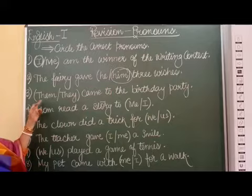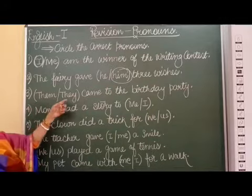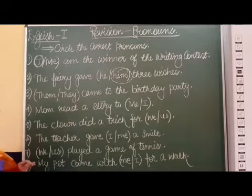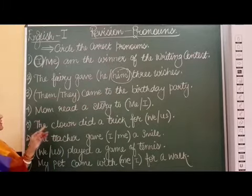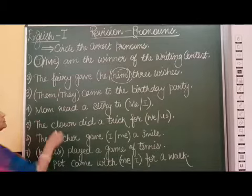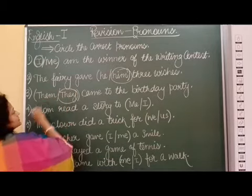Next. Them, they came to the birthday party. Them we cannot circle here. We will circle here. They, they came to the birthday party. So here we are going to circle they.